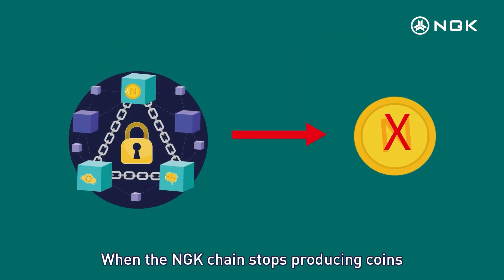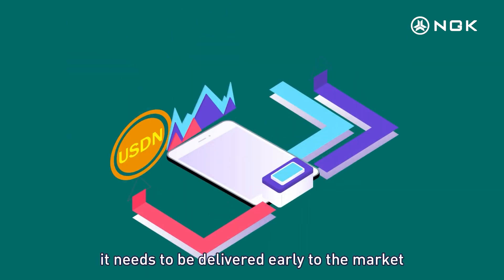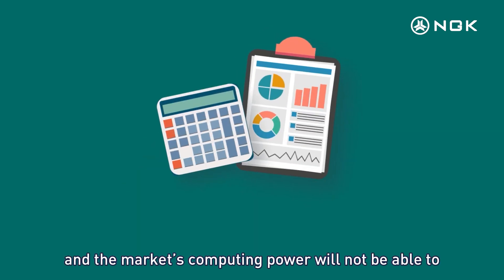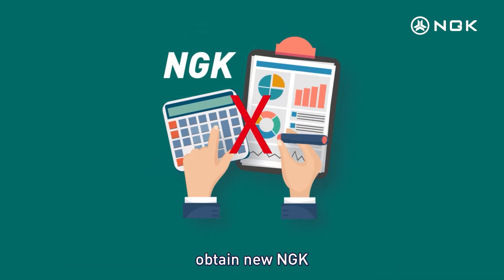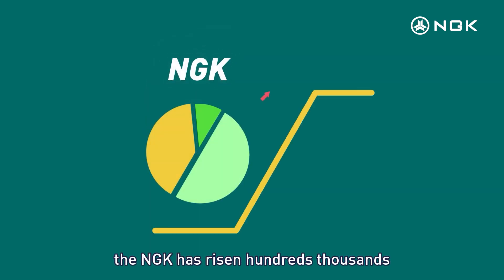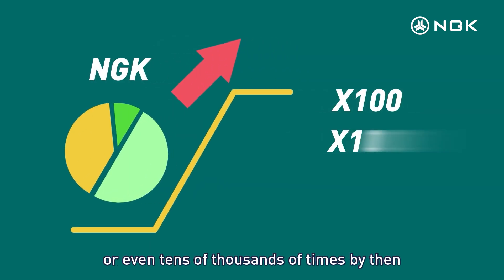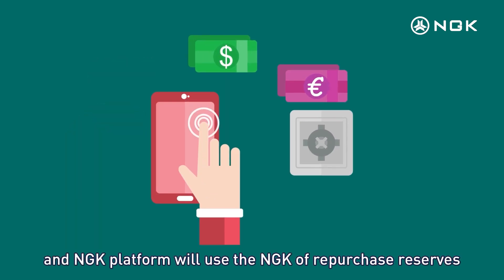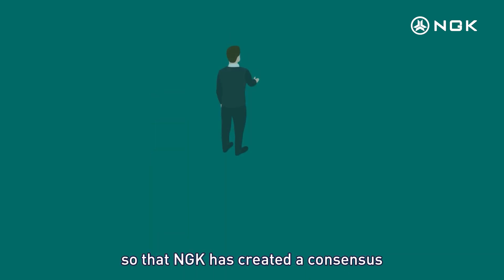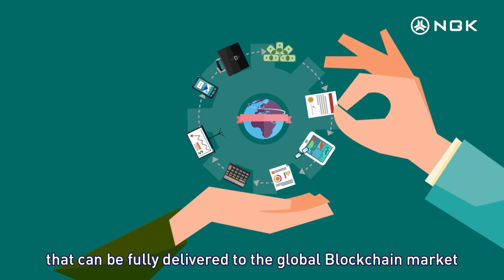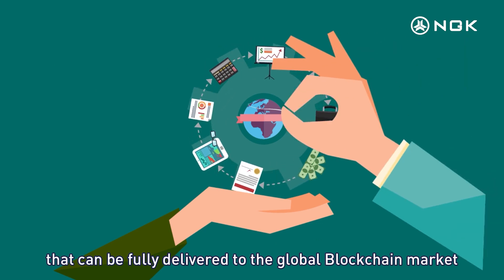When the NGK chain stops producing coins, it needs to be delivered early to the market, and the market's computing power will not be able to obtain new NGK. At that time, NGK may have risen hundreds, thousands, or even tens of thousands of times. The NGK platform will use the NGK of repurchase reserves to complete market delivery, so that NGK has created a consensus in the mainstream market that can be fully delivered to the global blockchain market.